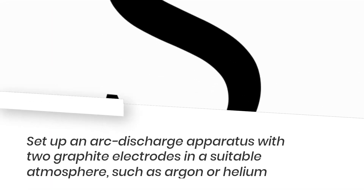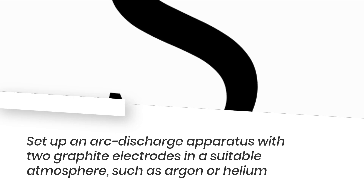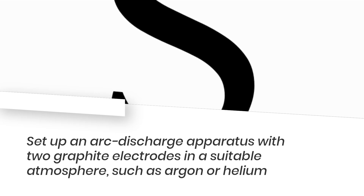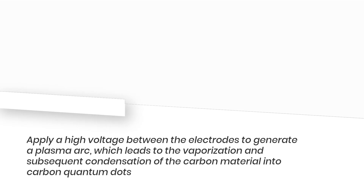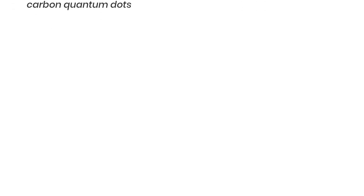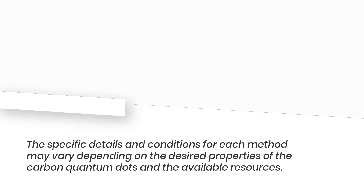Arc discharge method: Set up an arc discharge apparatus with two graphite electrodes in a suitable atmosphere, such as argon or helium. Apply a high voltage between the electrodes to generate a plasma arc, which leads to the vaporization and subsequent condensation of the carbon material into carbon quantum dots. The specific details and conditions for each method may vary depending on the desired properties of the carbon quantum dots and the available resources.